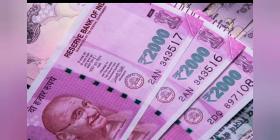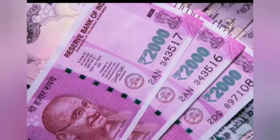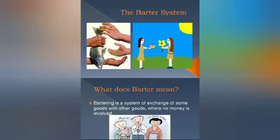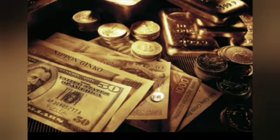Now let's learn about money. In earlier times there was a barter system — a system of exchange where goods and services are exchanged directly for other goods and services. Money replaced this system as the exchange medium.